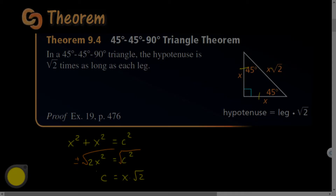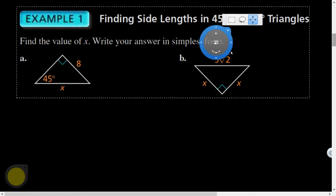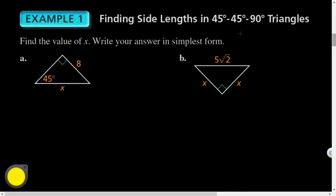Once you know that ratio, you don't have to redo the Pythagorean theorem over and over — just use the ratios. For example, question (a): is this a 45-45-90? Yes — by the base angles converse, the two legs are both 8. So x equals 8 times the square root of two. You could verify with full algebra, but this is much faster — just multiply 8 by √2.